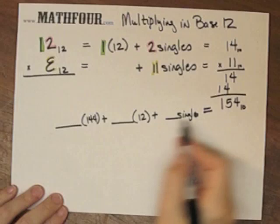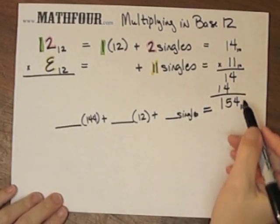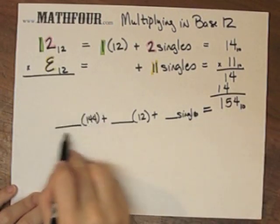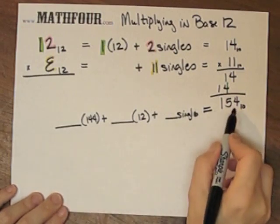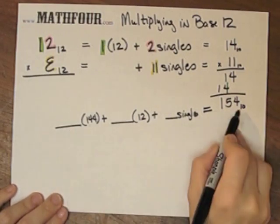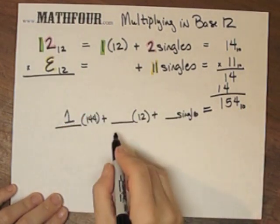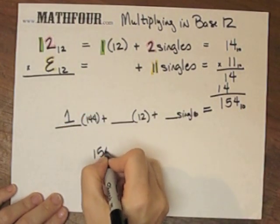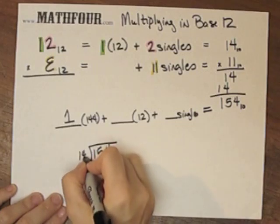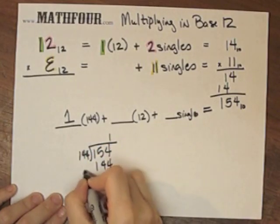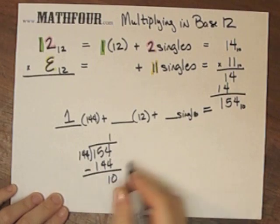So I have to convert back, I actually have to start over here, I can't work this direction. How many sets of 144 in 154? Well, I can see that that's 1, right? So, and then I'm left with 144, subtract, so I'm left with 10.